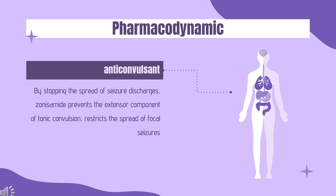Pharmacodynamics. By stopping the spread of seizure discharges, zonisamide prevents the extensor component of tonic convulsion, restricts the spread of focal seizures, and prevents the propagation of seizures from the cortex to subcortical structures. Aside from its antiepileptic effects, zonisamide is capable of activating neuroprotective mechanisms. It inhibits nitric oxide synthase and reduces ischemia-induced memory impairment and lipid peroxidation.